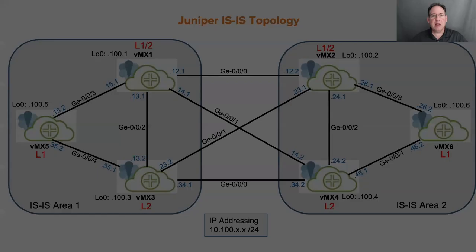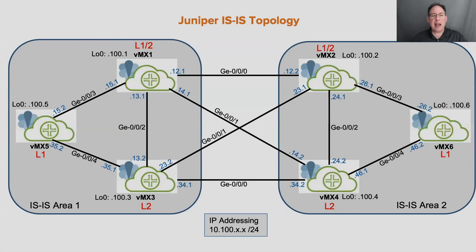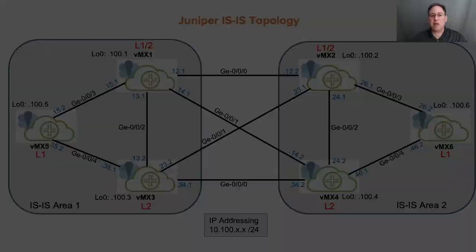That is our Juniper environment. And if we get to ISIS, this is how ISIS is going to be pre-configured with two different areas and various level one, level two routers. We probably won't get to that today, but in case you really want to learn how to do filtering with ISIS, don't fear because I'm going to show you in just a second a course I created that has everything I talked about today and a whole lot more.